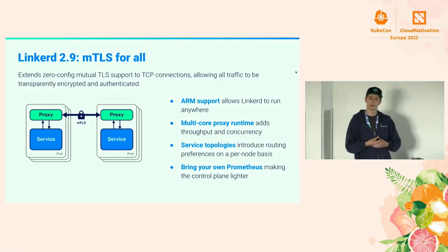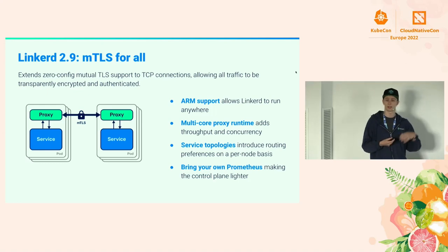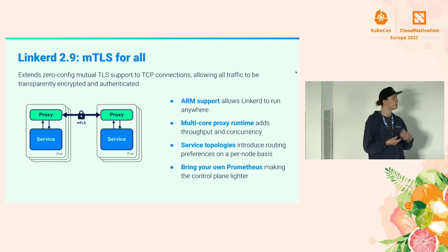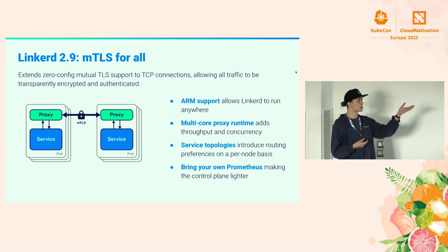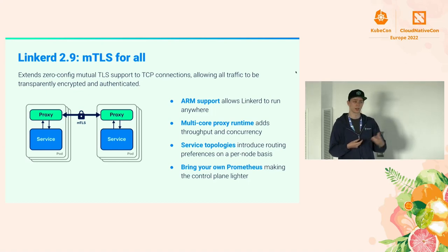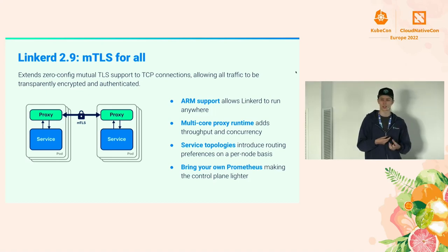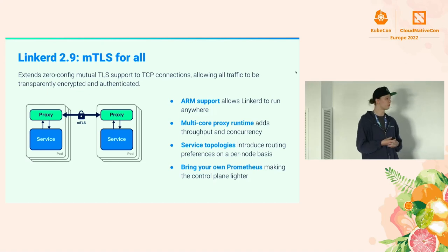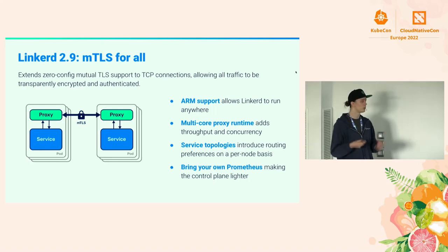Prior to 2.9, Linkerd only did MTLS for layer 7 protocols — HTTP and gRPC. But we wanted to introduce MTLS for TCP out of the box with no configuration, and we managed to do that. We've also added ARM support. We're the only service mesh, as far as I know, that compiles to ARM architecture. So if you have a home lab or ARM instances, you can run Linkerd on it. We introduced a multi-core proxy runtime so we can add more throughput and concurrency.